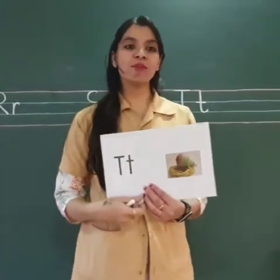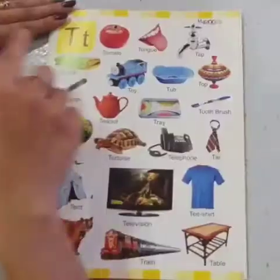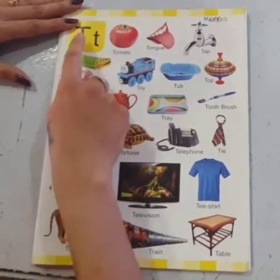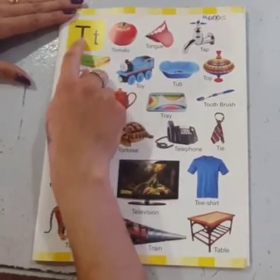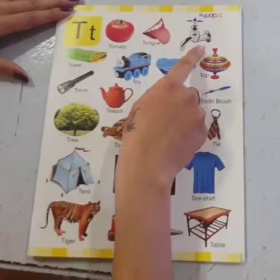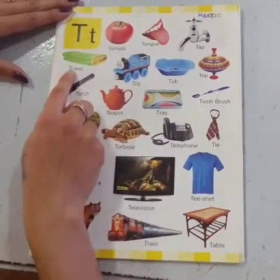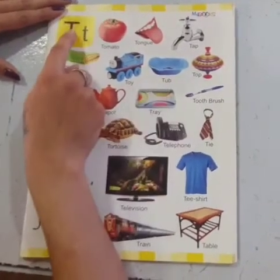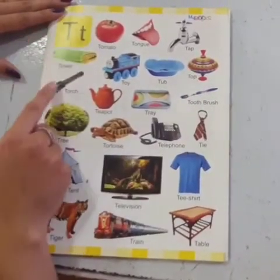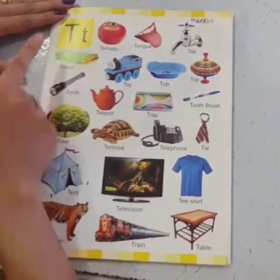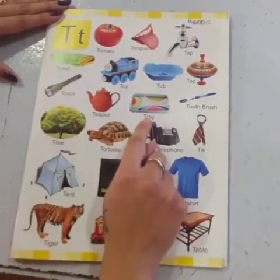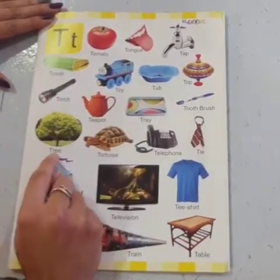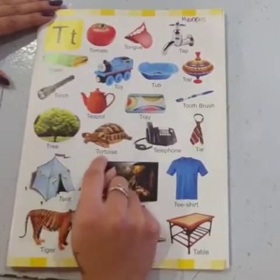Now let us see some vocabulary words related to letter T. Capital T, small t — T says T. T for tomato. T for tongue. T for tap. T for towel. T for toy. T for tub. T for top. T for torch. T for teapot. T for tray. T for toothbrush. T for tree. T for tortoise.